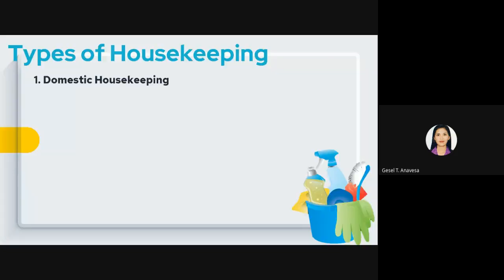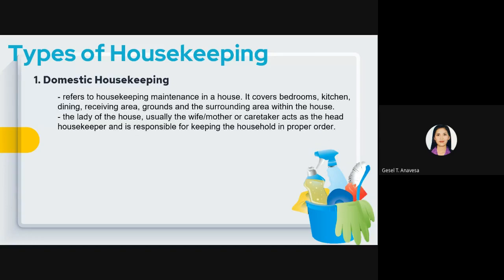Housekeeping has two types. First is domestic housekeeping, which refers to housekeeping maintenance in a house. It covers bedrooms, kitchen, dining area, receiving area, grounds, and the surrounding area. The lady of the house — usually the wife, mother, or caretaker — acts as the head housekeeper of the household.